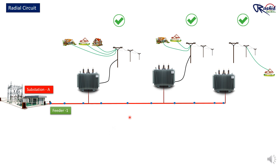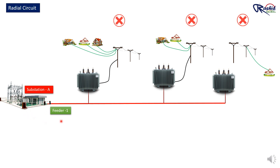However, if there is a fault or cable damage anywhere along this feeder, the entire system will be affected. When a fault occurs, the circuit breaker at the substation will automatically trip to protect the system. As a result, power to all the transformers connected to this feeder will be cut off, leading to a blackout for all the consumers in that area.